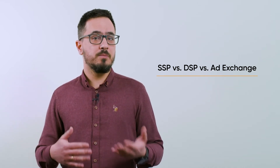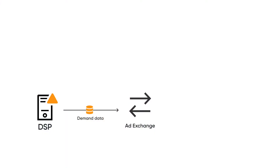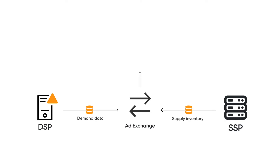SSP vs. DSP vs. Ad Exchange: SSPs work with other forms of ad tech. DSPs and ad exchanges are other key platforms in the process of programmatic buying and selling digital ads. Ad exchanges need data about advertisers to know which bidders qualify for a publisher's website and match their audience — they pull this information from DSPs. In turn, a DSP is used by advertisers to let an ad exchange know what their bid is and what they have to offer. SSPs are used to distribute publishers' inventory among ad exchanges, and the ad exchange connects the publishers with the advertisers who want to bid on their inventory.